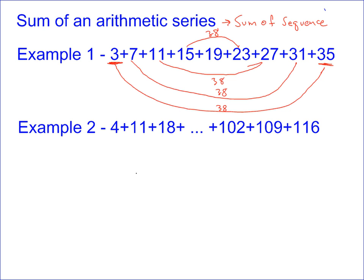The better way to do it is to recognize that all the numbers, if you add them up, all have an average of whatever the middle of the sequence is. If you notice, all of these have an average of 19.